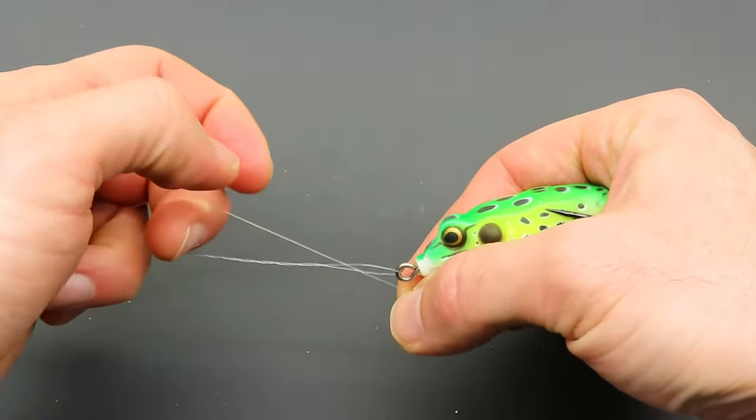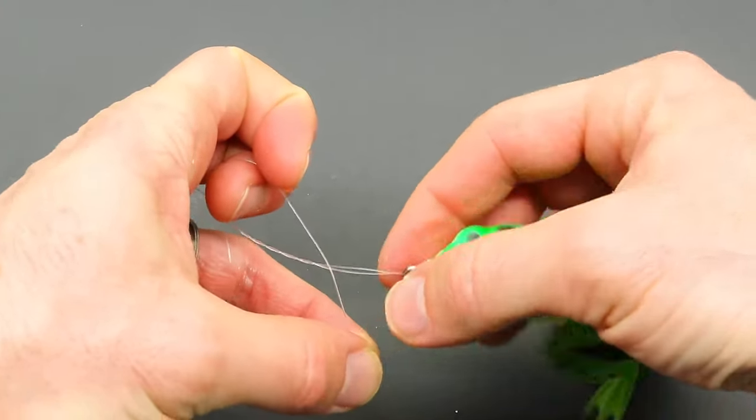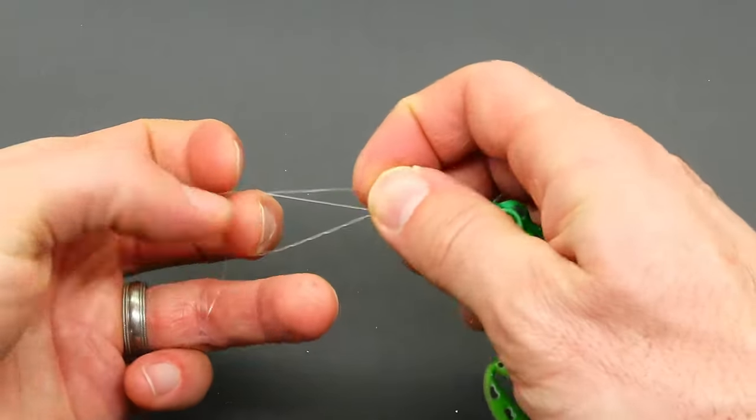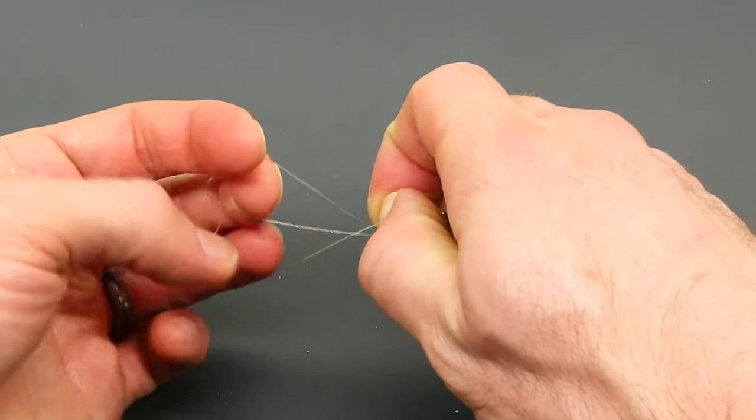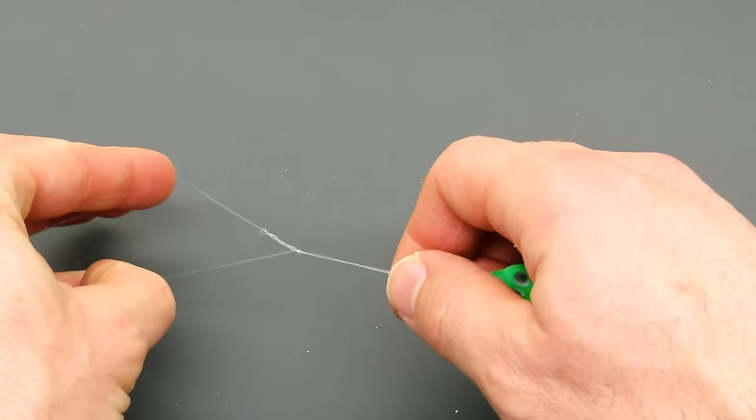If you are tying the original clinch knot this would be the last step and you would just pull on the tag to tighten it down. But the improved clinch knot has you take the tag end and place it through this loop as well and then pull on the tag and the main line to loosely tighten it down.